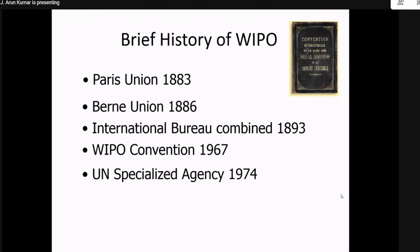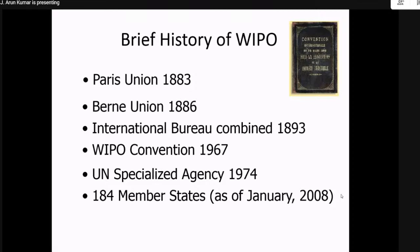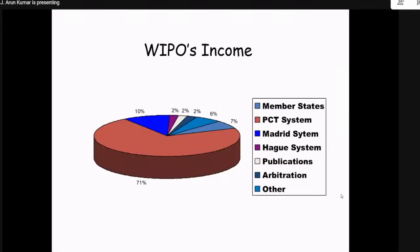WIPO was converted into a UN specialized agency in 1974, making it stronger, and now has more than 190 member states. The world intellectual property income is mainly generated through international PCT filing. PCT is the Patent Cooperative Treaty — when you file a patent, you can go for either a national patent or a PCT patent. Other income comes from the Madrid and Hague treaties, each protecting specific terms.